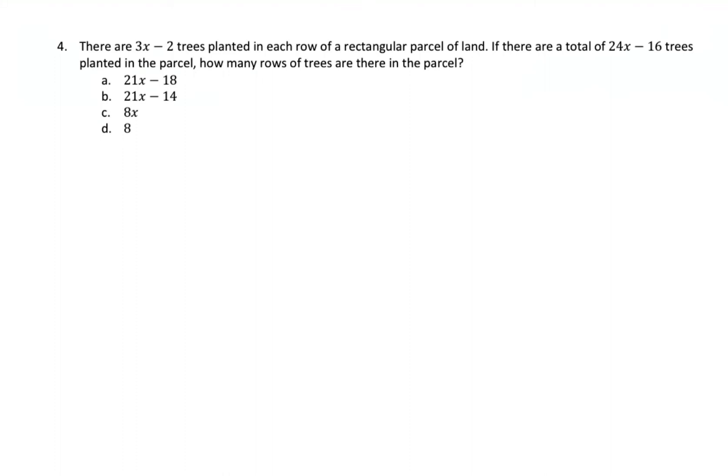Alright, so it says that it's a rectangle. It's a rectangular parcel of land. We know that 3x minus 2 trees are planted in each row. We don't know how many rows there are. So this information we don't know. But we know that the total amount of trees that fill on the inside of this land is 24x minus 16.